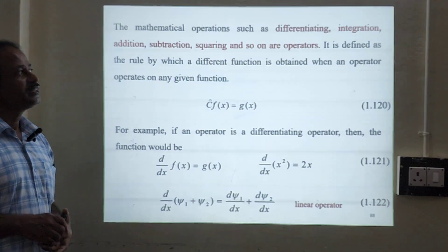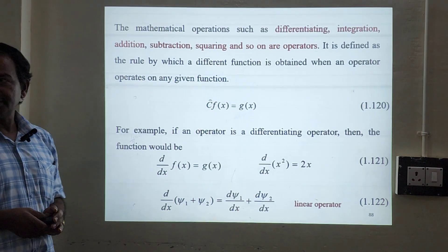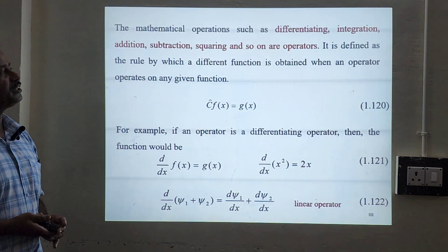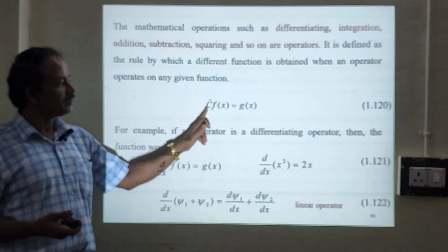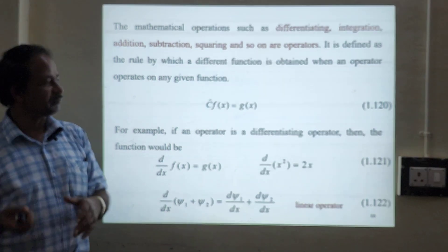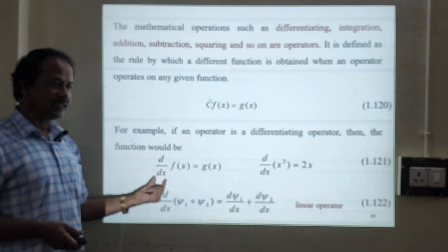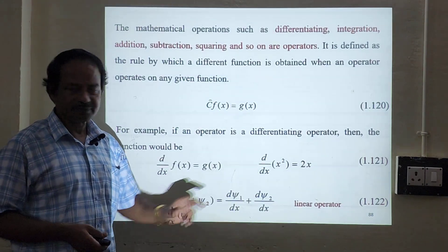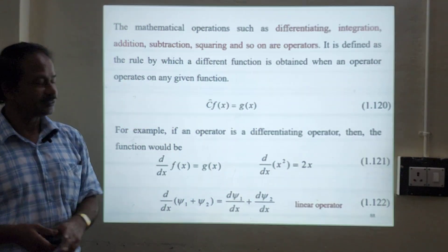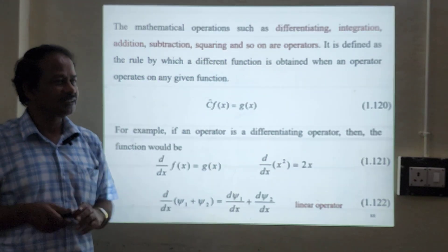Mathematical operations such as differentiation, integration, addition, subtraction, squaring — all are called operators. An operator is defined as the rule by which a different function is obtained when the operator operates on any given function. For example, operator C defined as d/dx operates on f(x) will give g(x). So d/dx operating on x² gives 2x — here 2 is the eigenvalue, but x² is a wave function, not an eigenfunction.